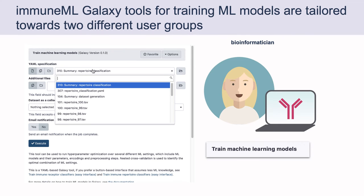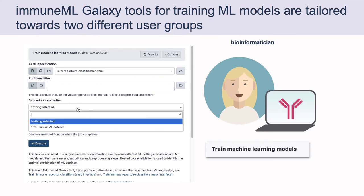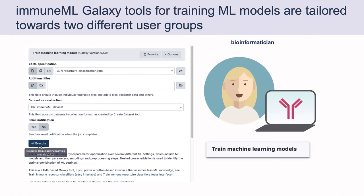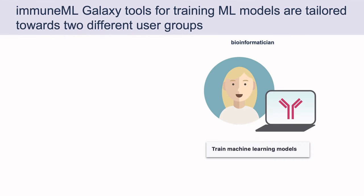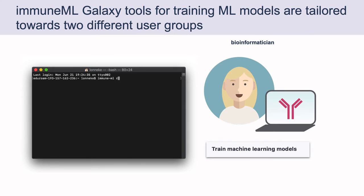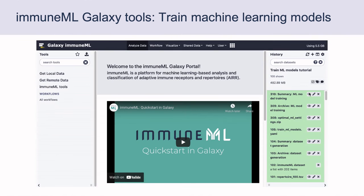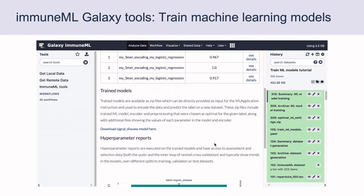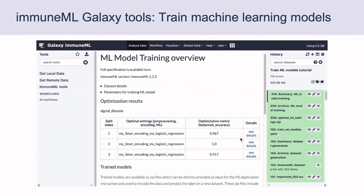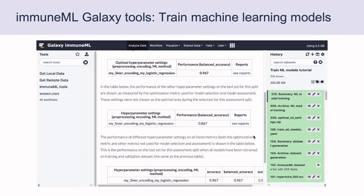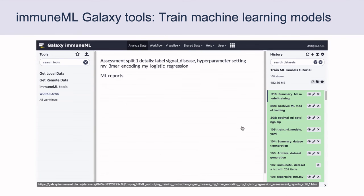For bioinformaticians, we provide a YAML-based interface which allows full control over the analysis parameters, access to additional components for preprocessing, data encoding, and machine learning methods, and allows for seamless switching between the Galaxy and command line interfaces. In the resulting HTML summary file, we find information about the performance of the different models in the outer and inner cross-validation loops, and other relevant statistics and visualizations.